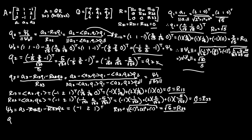For our very last step, we can solve for Q3, now that every single variable within R is solved. Q3 equals psi3 over the magnitude of psi3: (-1, 2, 1) transposed over root 6, which is simply (-1 over root 6, 2 over root 6, 1 over root 6).